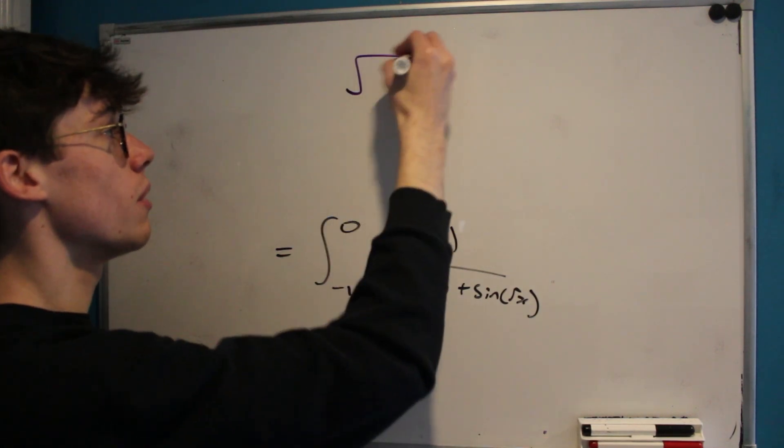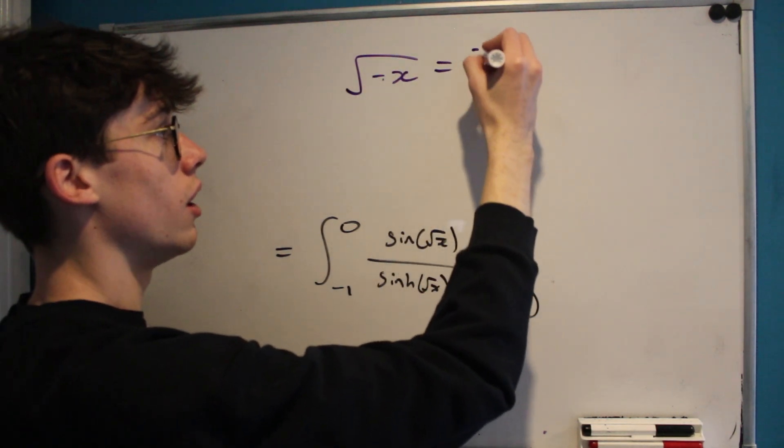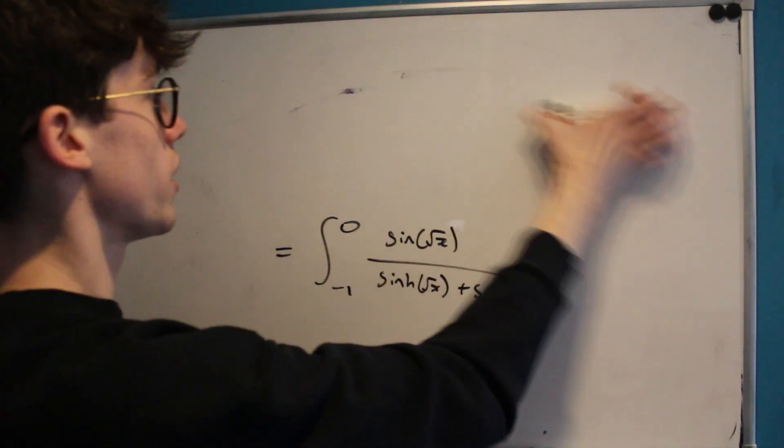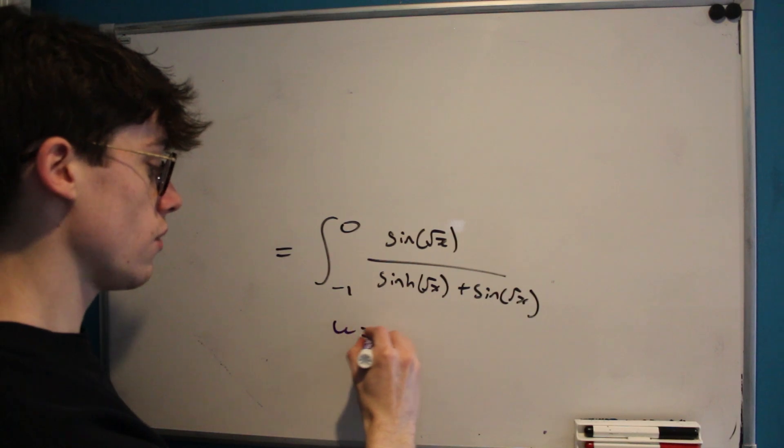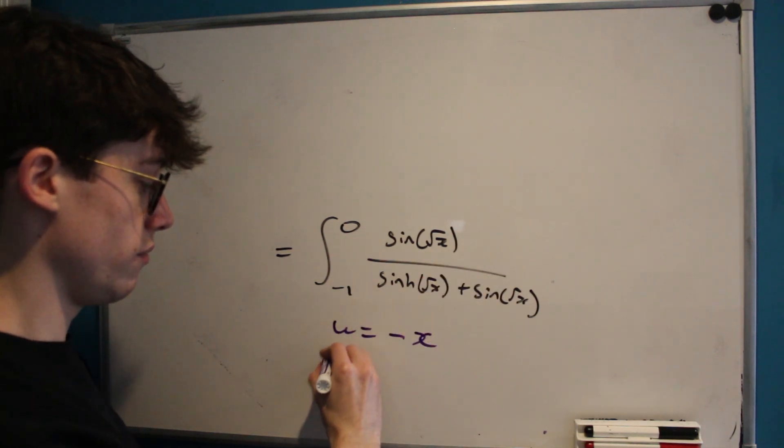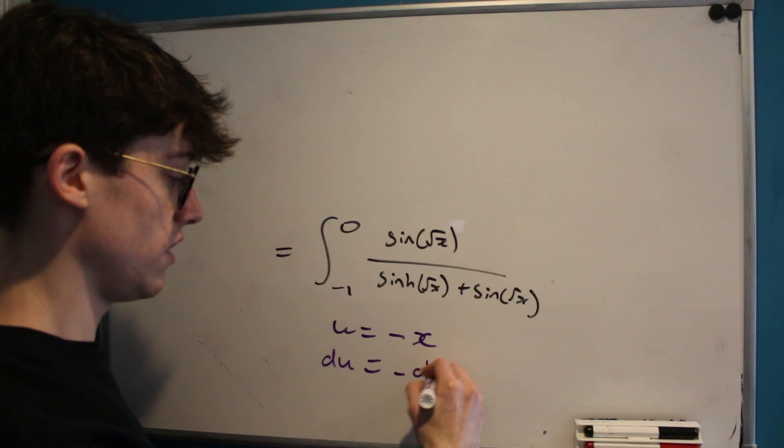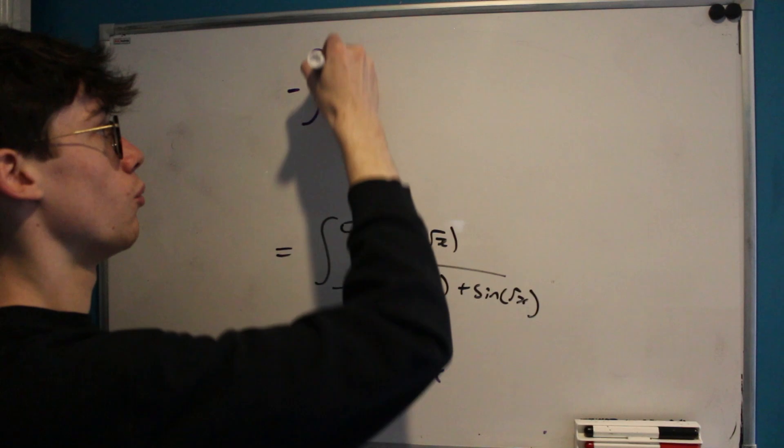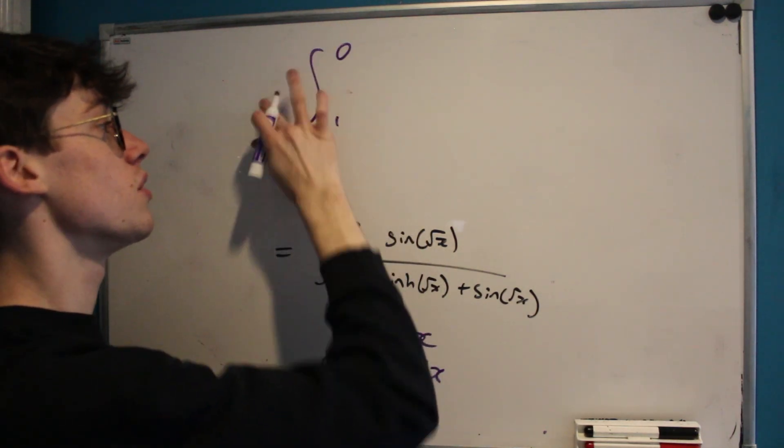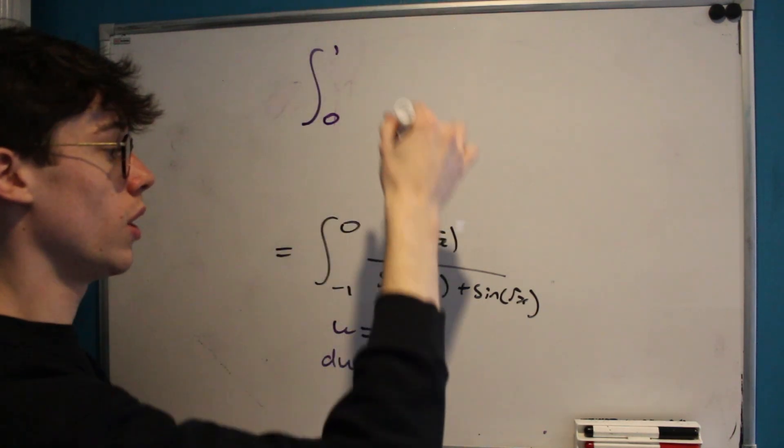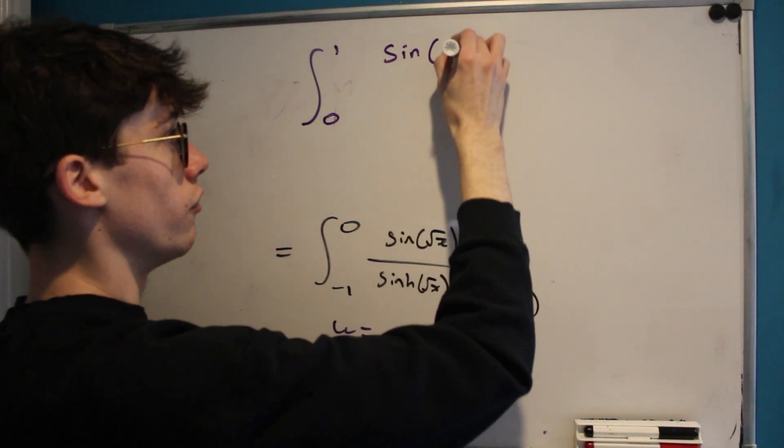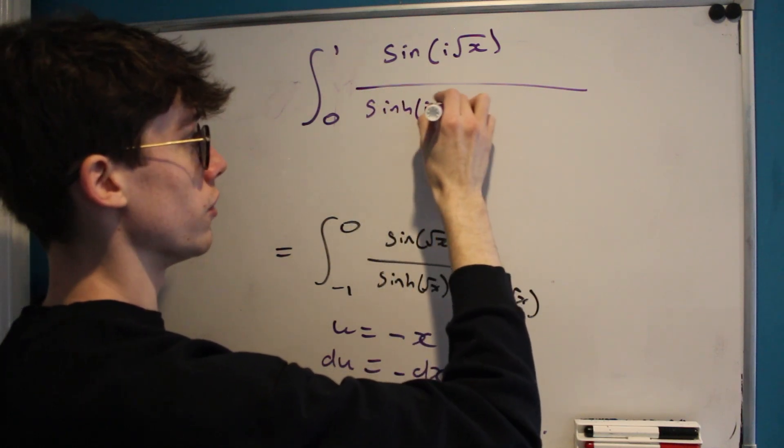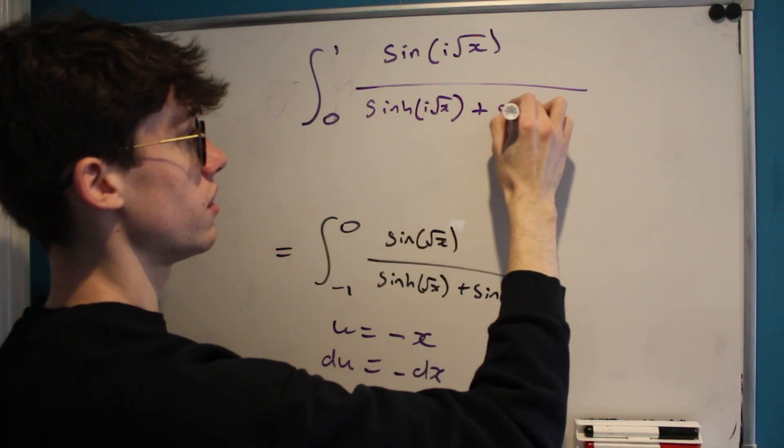Now we know that the square root of negative x is equal to i times the square root of x. So why don't we make that substitute - let's say we're going to let u equal negative x. Of course meaning that du is equal to negative dx and our bounds become 1 and 0. So we end up with negative the integral from 1 to 0, but of course I'm going to use that negative to flip our bounds, 0 to 1 of sine of i root x divided by sinh of i root x plus sine of i root x.